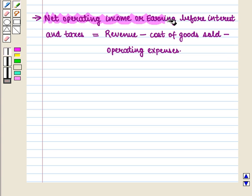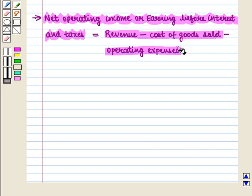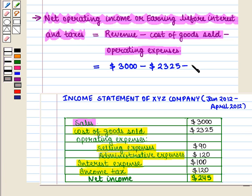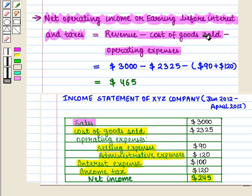Also, net operating income, or earnings before interest and taxes (EBIT), is given by revenue minus cost of goods sold minus operating expenses. So here EBIT equals $3,000 minus $2,325 minus operating expenses of $90 plus $120. On solving this further, we get $465. So earnings before interest and taxes is $465.